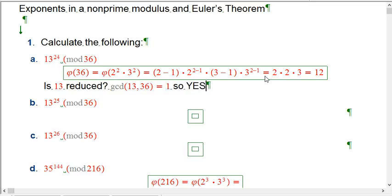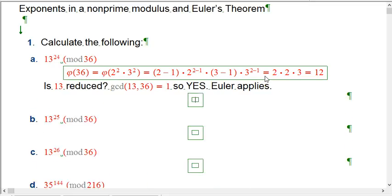So yes, Euler applies, which in this case is really good. I set it up to be good. 13 to the 24th, well, 13 to the 12th, what that says is that 13 to the 12th is just going to be 1. That's the result of Euler's theorem, if I take a number to the phi function of the mod, then I'm going to get 1.